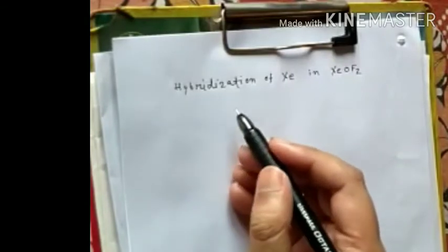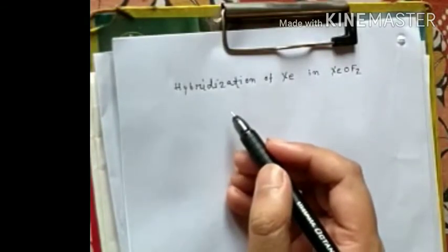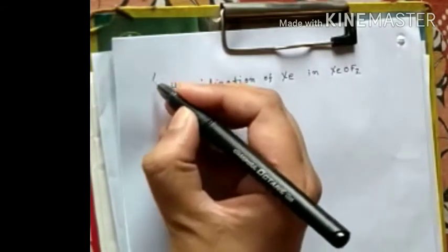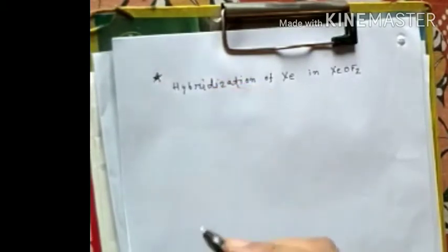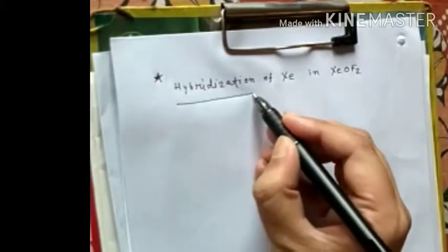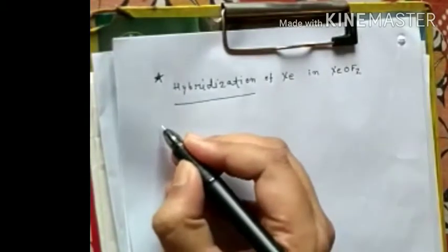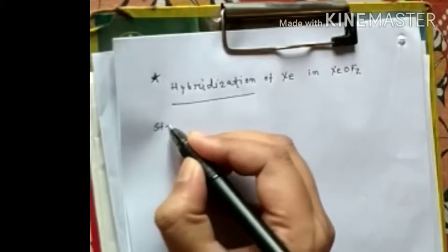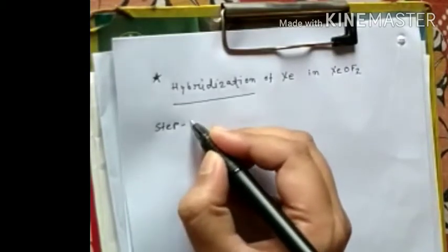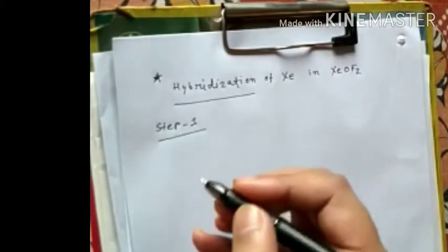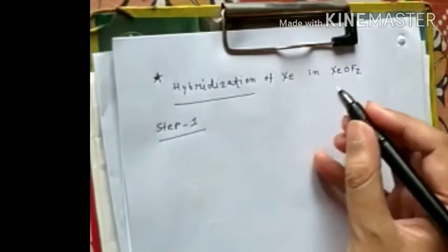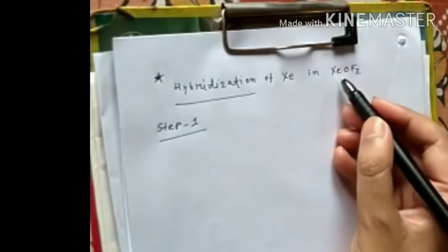Today we will learn how to calculate hybridization of different molecules. For example, we have this question: how to solve the hybridization of xenon in XCOF2? So first step is you have to find the central atom among these—xenon, oxygen, and fluorine. Which one has highest covalency? Xenon has the highest valency, so xenon will be the central atom.